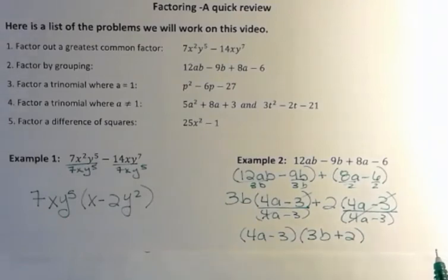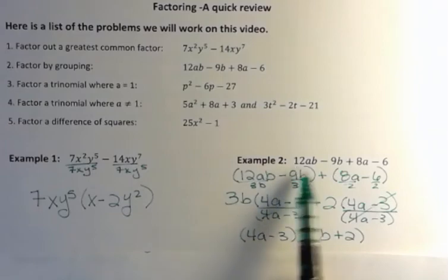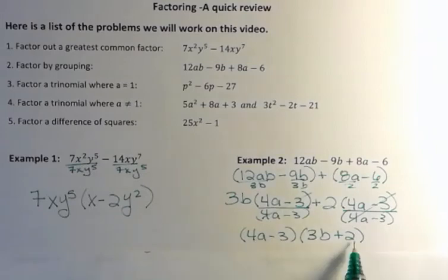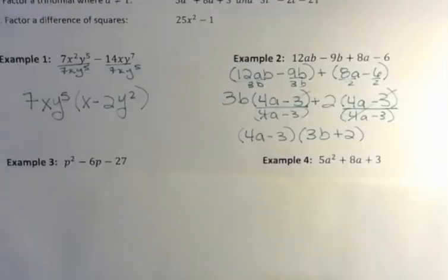Remember, you can always check by multiplying if I wanted to. 4a times 3b is 12ab. Negative 3 times 3b is negative 9b. 4a times 2 is 8a. And negative 3 times 2 is negative 6. So that checks out.